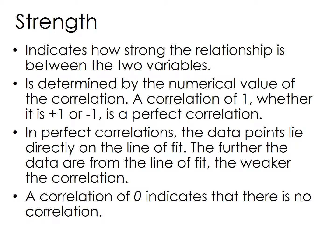Strength indicates how strong the relationship is between two variables. Strength is determined by the numerical value of the correlation. A correlation of plus one or minus one is a perfect correlation — in perfect correlations, the data points lie directly on the line of fit. The further the data are from the line of fit, the weaker the correlation. A correlation of zero indicates that there is no correlation.